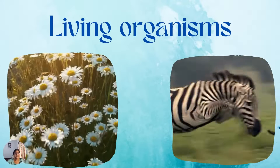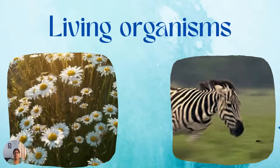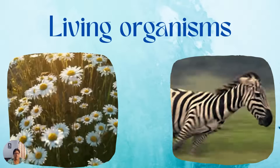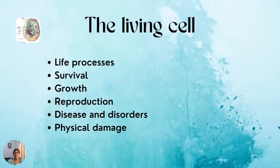Both plants and animals perform so many life processes for their survival. How does it happen? With the help of the cells, the basic unit of life. Life processes like respiration, photosynthesis, and circulation are carried out. All types of diseases and disorders begin at the cellular or molecular level. Physical damage like burns or fractures cause damage at the cellular level. We all know how the pandemic, the COVID-19, has impacted our lives.